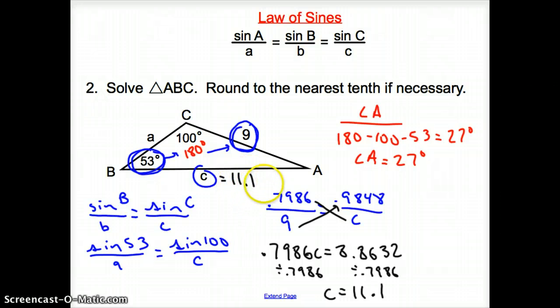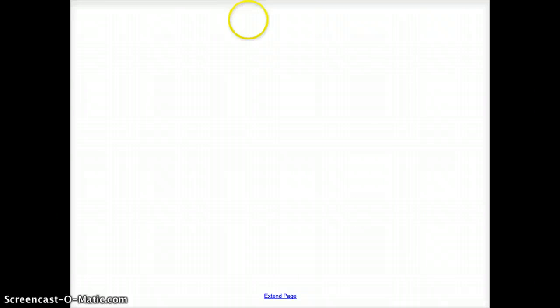Now, what is the only thing that is left? We are still left with this side a. So, now, we have to set up another proportion trying to find side a. So, we set that up as, I am still going to use b and side b. So, it is sine of b over little b. And, I am going to set that equal to sine of a over little a. Now, I can use this sine a because I found that to be 27. So, here we go. Setting it up.